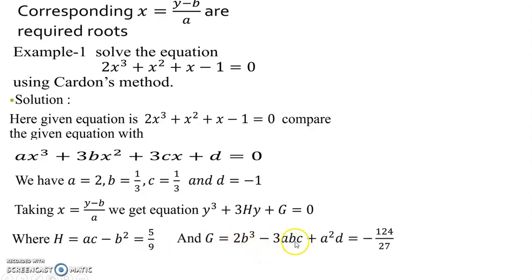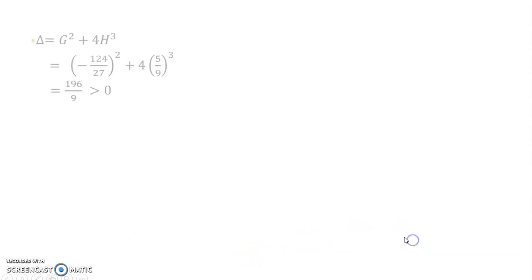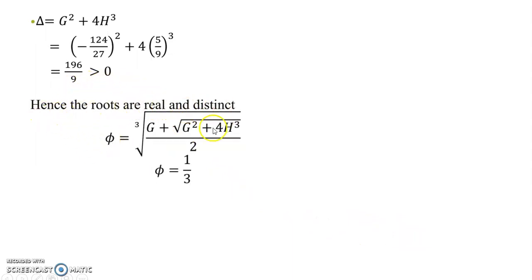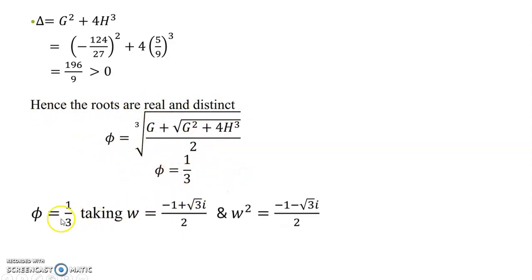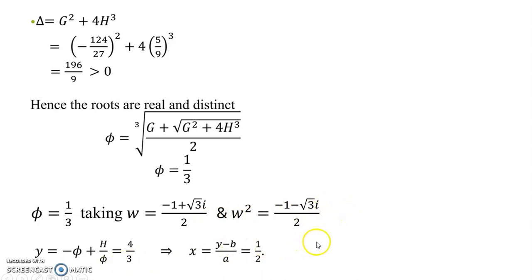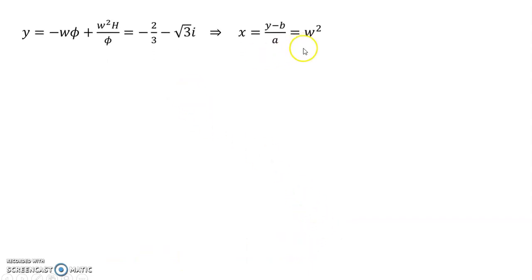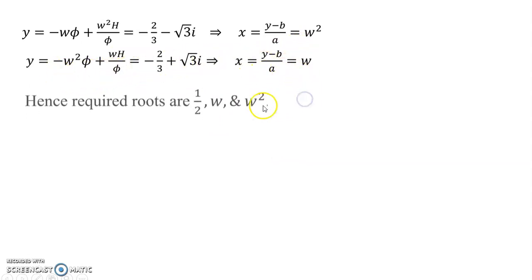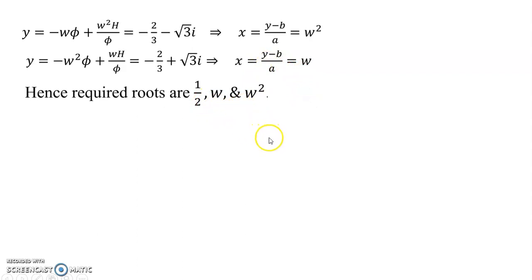We compute h = ac - b² = 5/9, and g = 2b³ - 3abc + a²d = 124/27. We then find Δ and the value φ = 1/3. Taking ω = (-1 + √3·i)/2, we get y = 4/3, y = (1/2)ω, and y = (1/2)ω². So the answer is y = 1/2, ω/2, ω²/2.